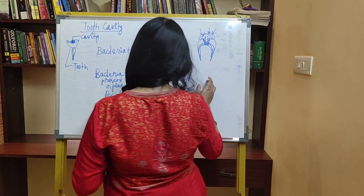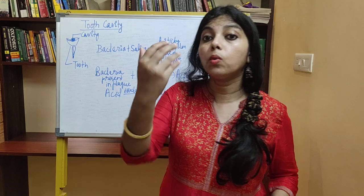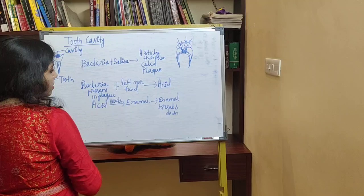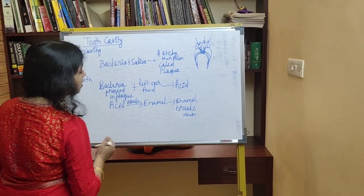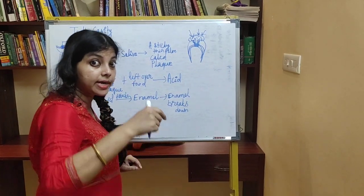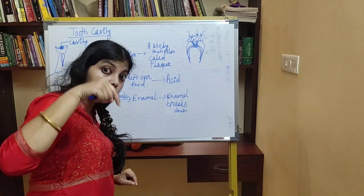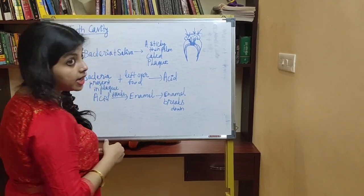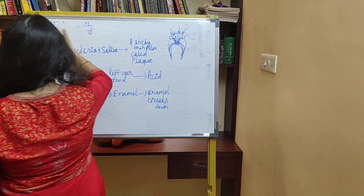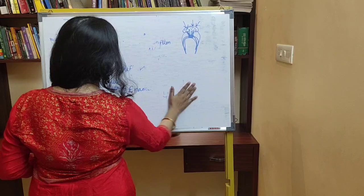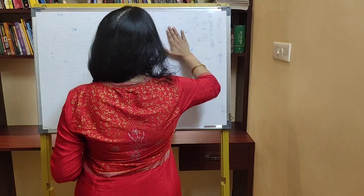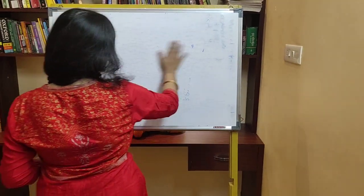That is the reason you need to maintain oral hygiene. This is all about how a tooth cavity is formed. After the enamel breaks down, this continues until it reaches the pulp, and it can go to the roots and to the gums. It is a very, very severe case. You need to maintain proper hygiene.